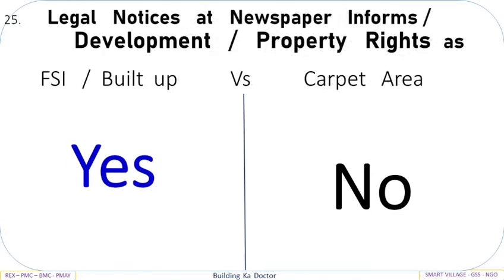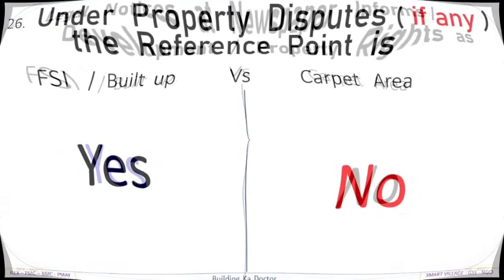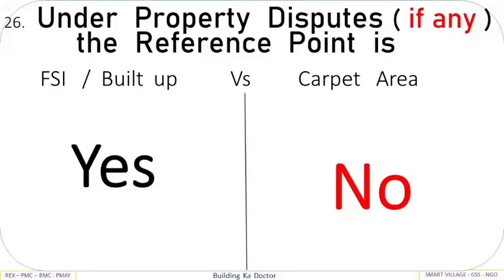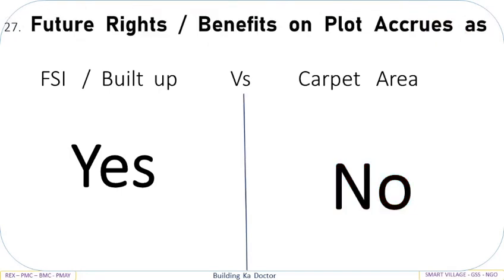Legal notices in newspapers regarding development property rights are expressed as FSI Built-Up: Yes, vs Carpet Area: No. Under property disputes, if any, the reference point is FSI Built-Up: Yes, vs Carpet Area: No. Future rights and benefits on the plot occur as FSI Built-Up: Yes, vs Carpet Area: No.